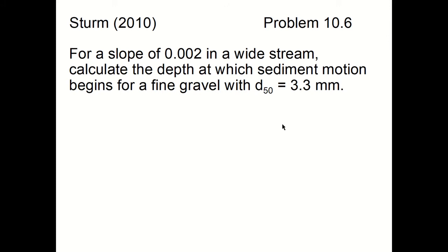For a slope of 0.002 in a wide stream, calculate the depth at which sediment motion begins for a fine gravel with a d50 equal to 3.3 millimeters.